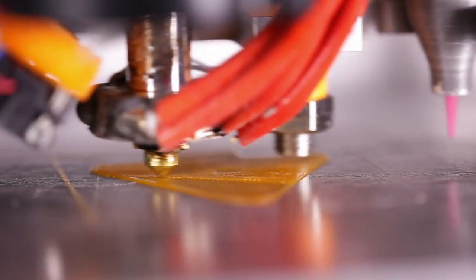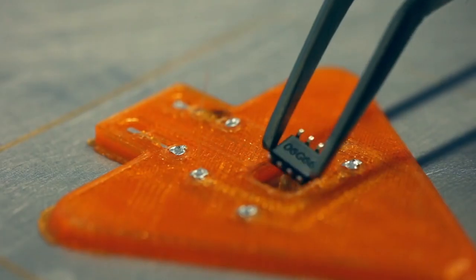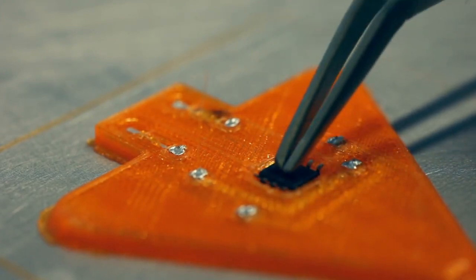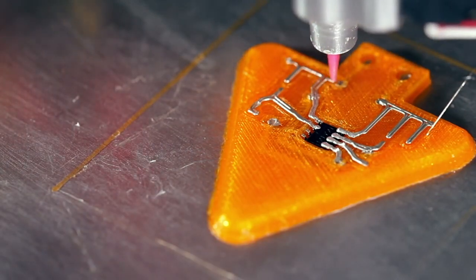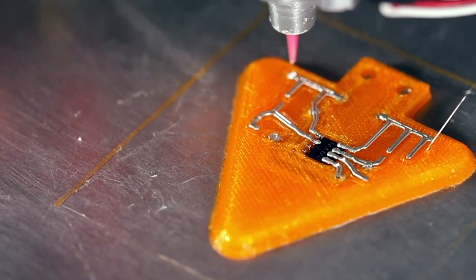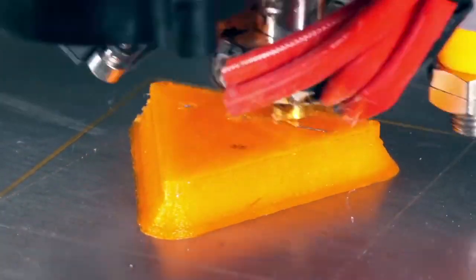To place a part, the printer stops, allows you to remove the bed, place the part inside of the material, and then replace the bed on the printer. It will print right where it left off, knowing that there's a part inserted inside of it.